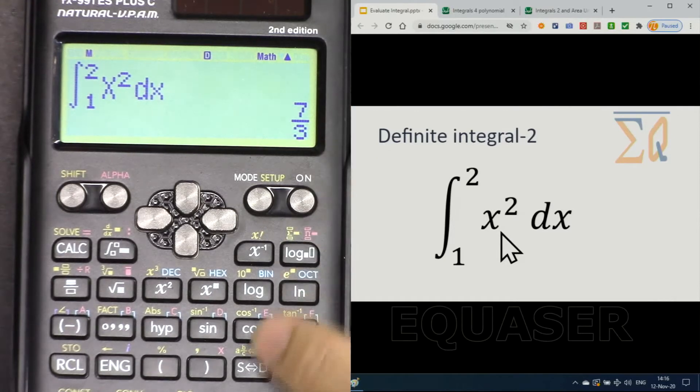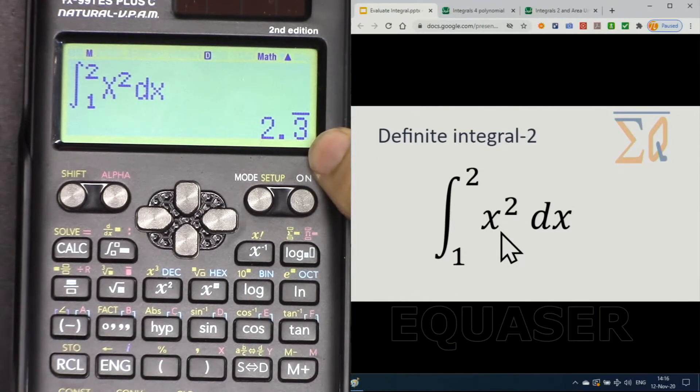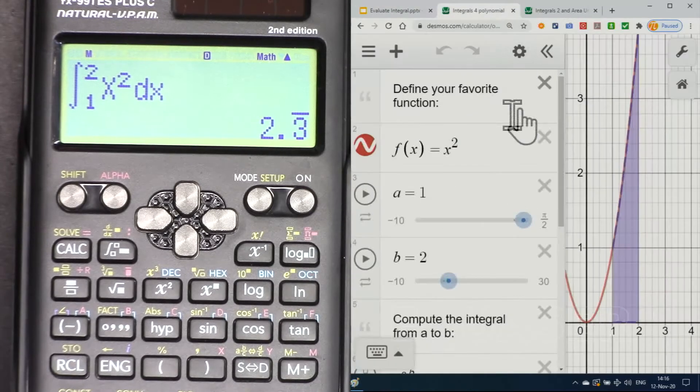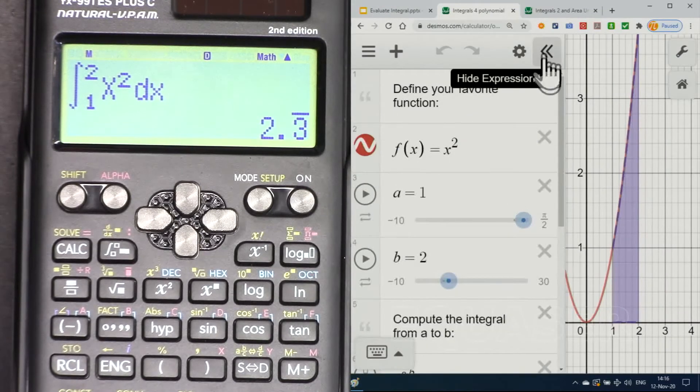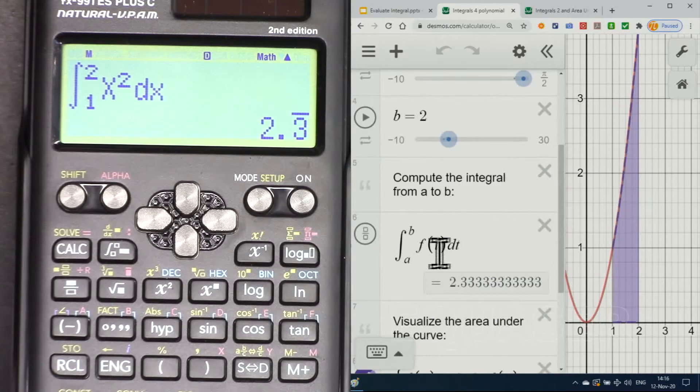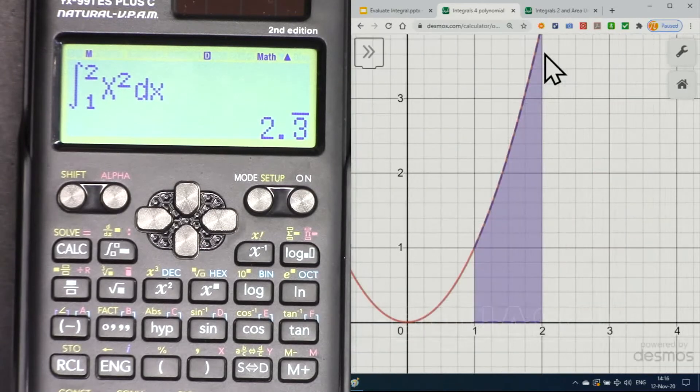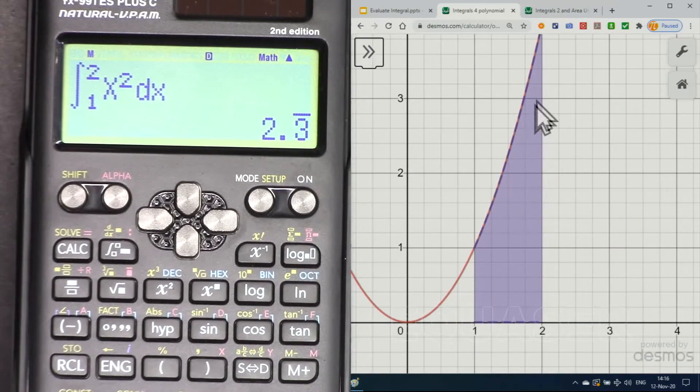Now for this, it's unitless, and the answer is 7 over 3, or 2.333.